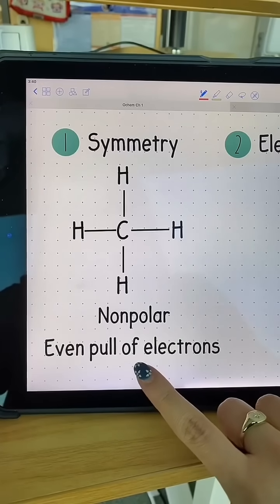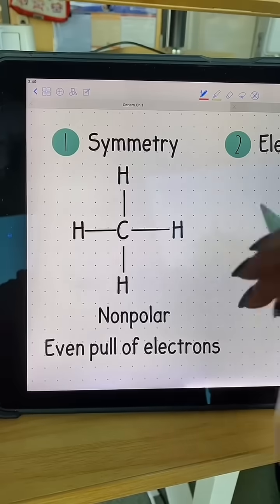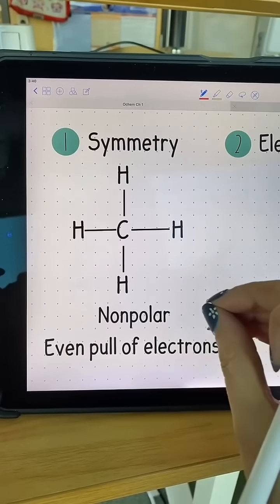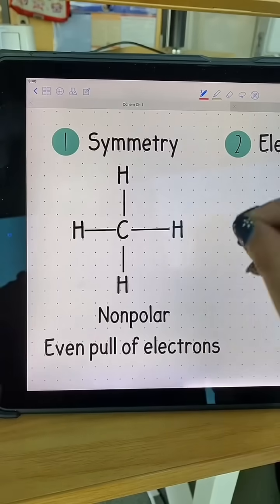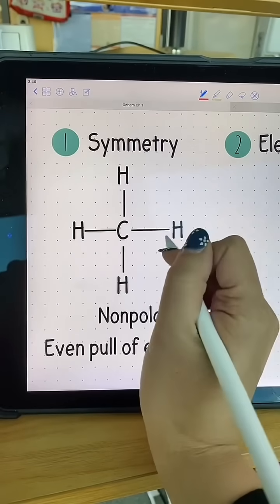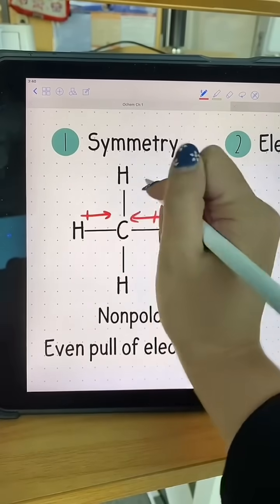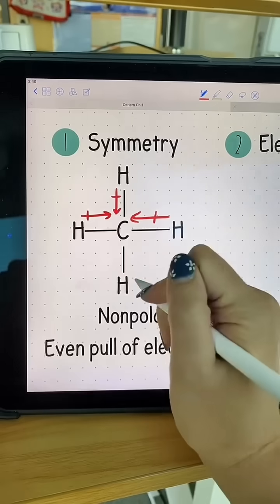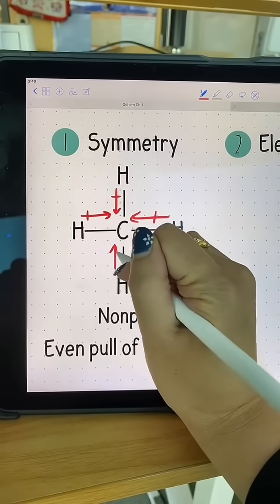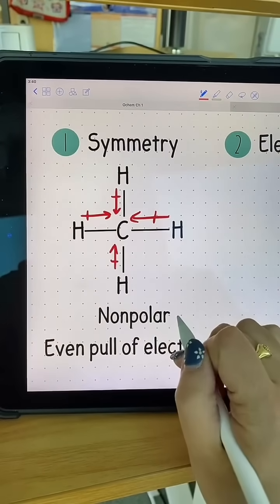have an even pull of electrons. Think of this as everything pulling together, so it's going to cancel out. I'll show how this would pull - it would go in this direction. How I'm drawing this is just towards the most electronegative atom, which in this case is carbon. Because of that, I know this is nonpolar.